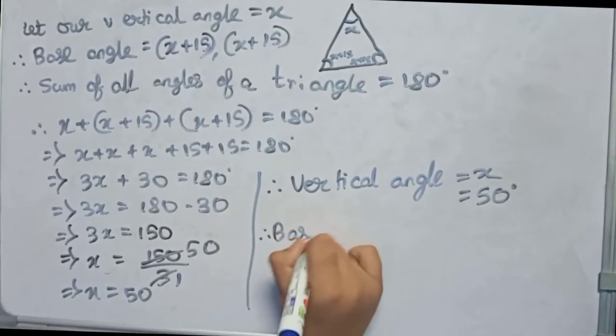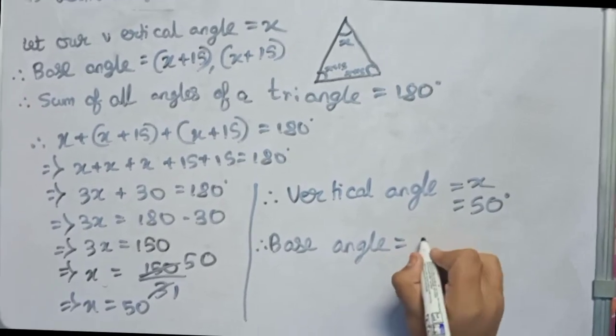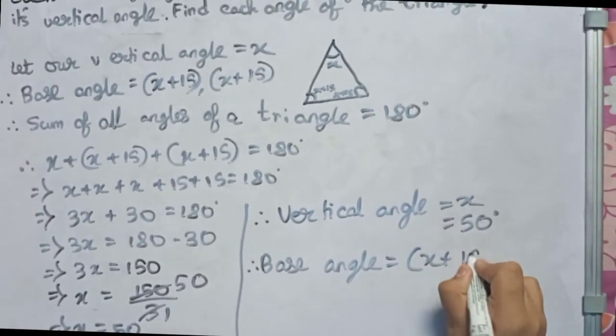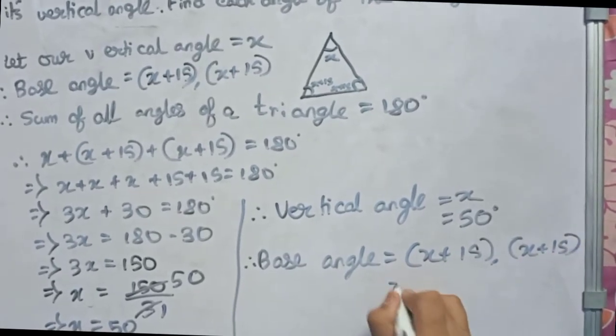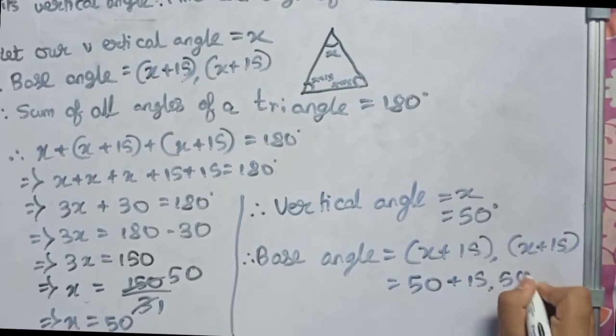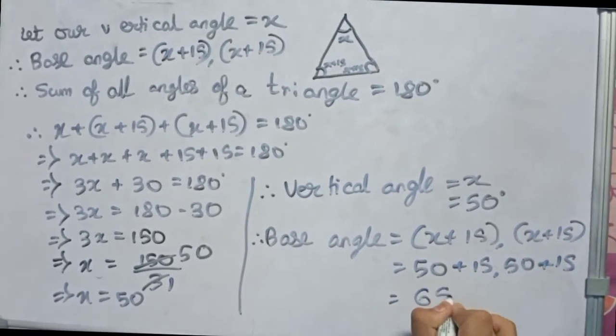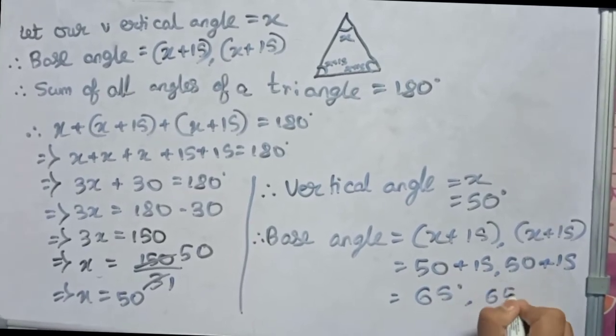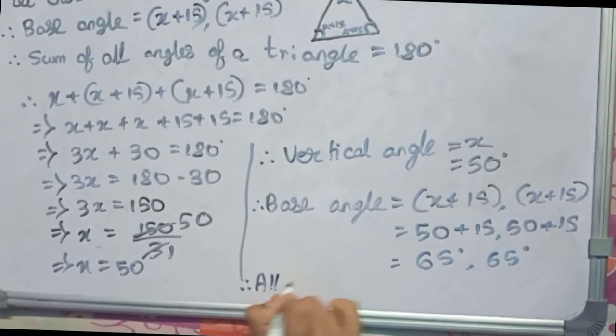Now our base angle, that is x plus 15, x plus 15, so it will become 50 plus 15, 50 plus 15. x plus 15 equals to 65 degrees. So this is our base angle. Therefore all the angles...